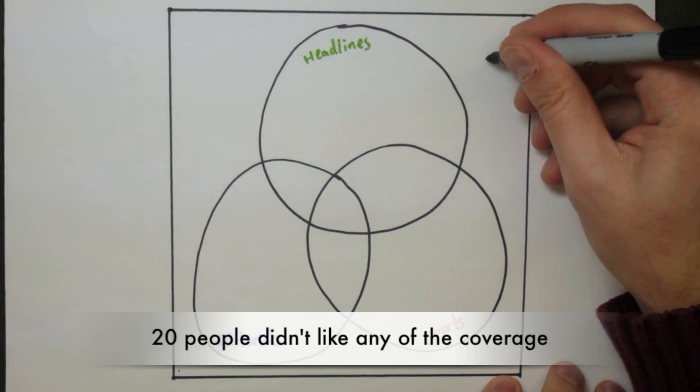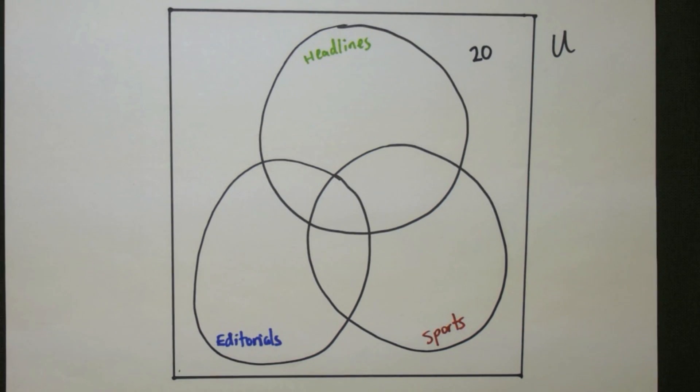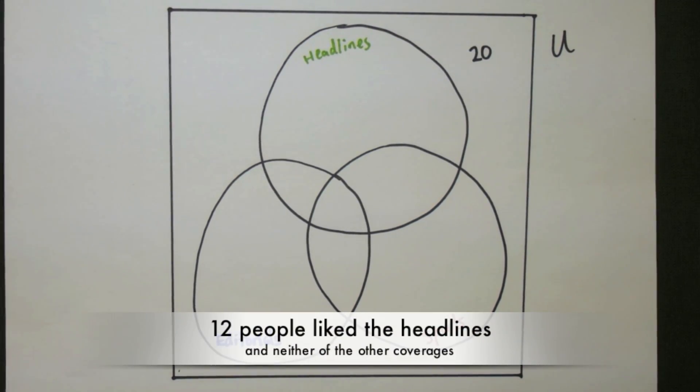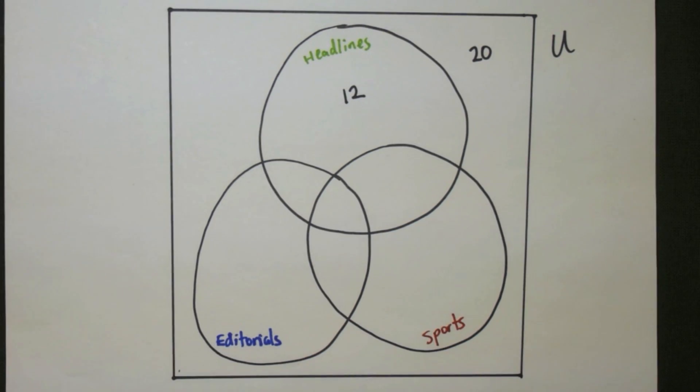So we start with the 20 people who didn't like any of the coverage. Those are going to be outside of all three circles, so in the universal set. Then 12 people like the headlines and neither of the other two coverages, so they fit into this part here.